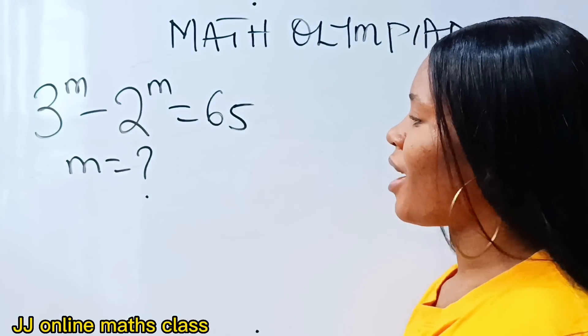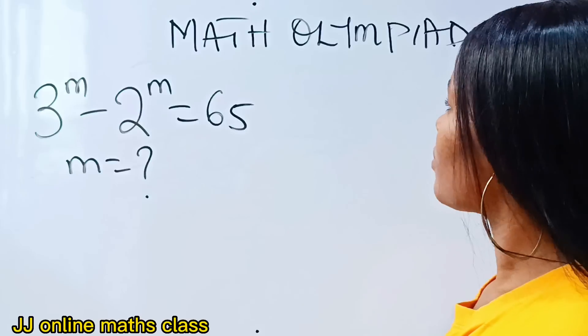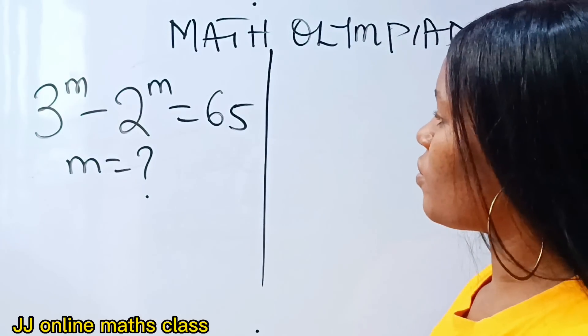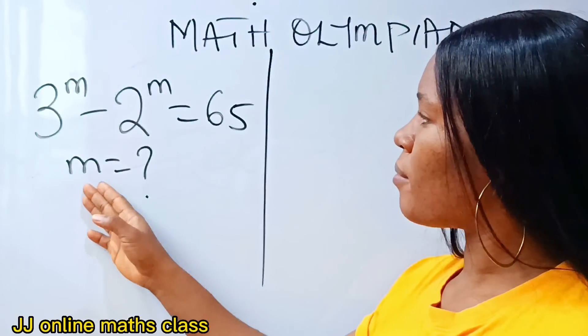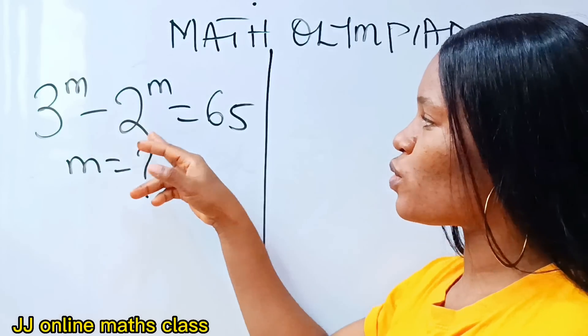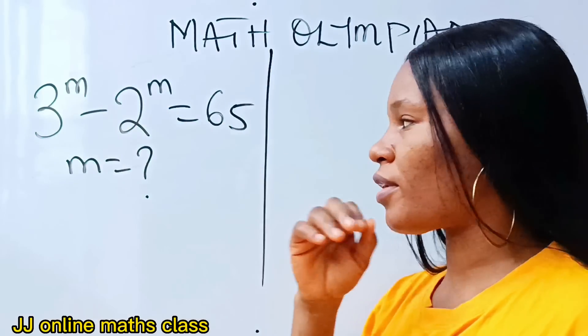Welcome back to my channel. Let's solve this together. Today we are asked to solve for m if 3 to the power of m minus 2 to the power of m equals 65.